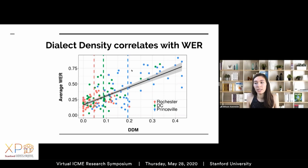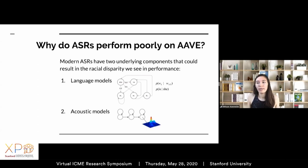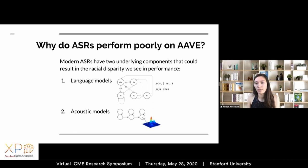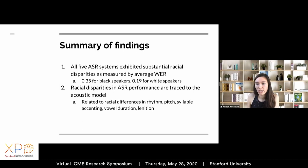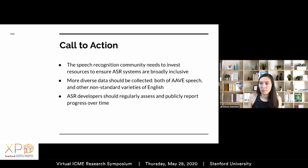Why do ASRs perform poorly on AAVE speech? There are two underlying components to modern ASR models: language models, which measure what you say — predicting lexicon and grammar, like GPT-2 — and acoustic models, which measure how you say what you say, capturing phonology, phonetics, and prosody. We found through a series of tests that language models themselves do not yield the racial disparity we see in word error rates, but acoustic models do recreate the same magnitude of disparity. In summary, all five ASR systems had word error rates twice as bad for black speakers as for white speakers, likely due to acoustic models not trained on diverse speech data.